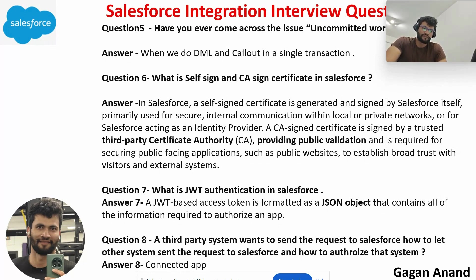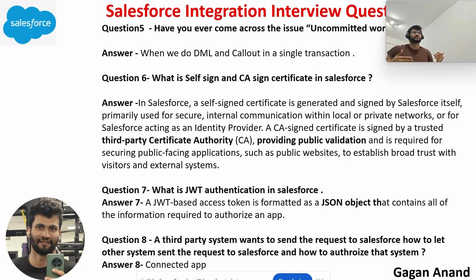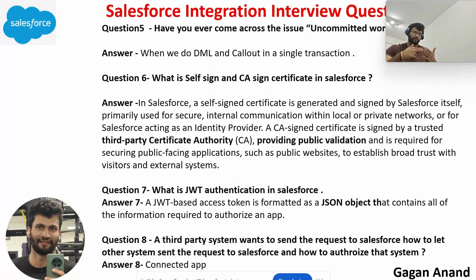Eighth question: a third-party system wants to send a request to Salesforce — how do you allow other systems to send requests to Salesforce and authorize them? For inbound integration, you need to create a Connected App in Salesforce, which provides you a consumer key and consumer secret. You give those credentials to the third-party system, they hit the Salesforce base URL and send the request. If Salesforce is sending outbound requests, you use Named Credentials and provide the endpoint of the third-party system inside the Named Credential.